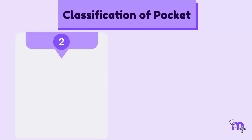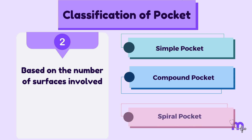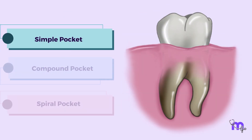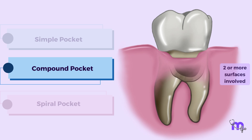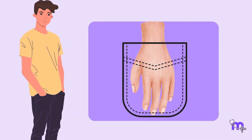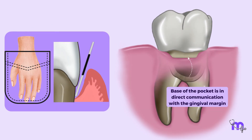The second classification is based on the number of surfaces involved. It can be a simple, compound, or a spiral pocket. In the simple type, the pocket is present only on a single tooth surface. In the compound type, the pocket is present on two or more surfaces. Imagine placing your hand into your jean's pocket — your hand directly reaches the base of the pocket. Similarly, when a probe is placed, the base of the pocket is in direct communication with the gingival margin.